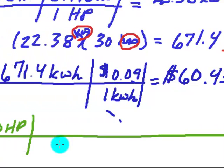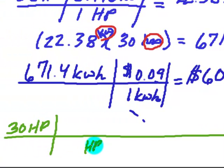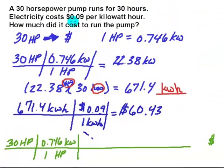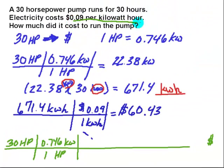So I've got horsepower on top. So I'm going to put horsepower underneath. For every one horsepower, .746 kilowatts. And now I've got kilowatts. And the only other thing that I have that I know from the problem is up here this nine cents per kilowatt hour.